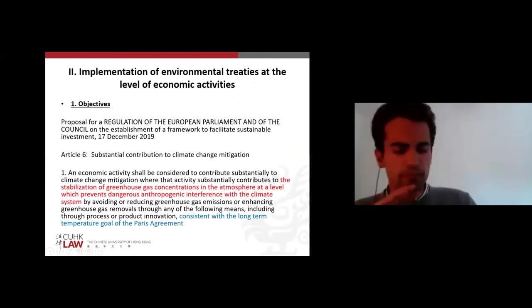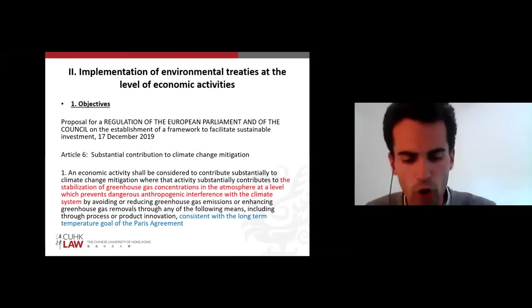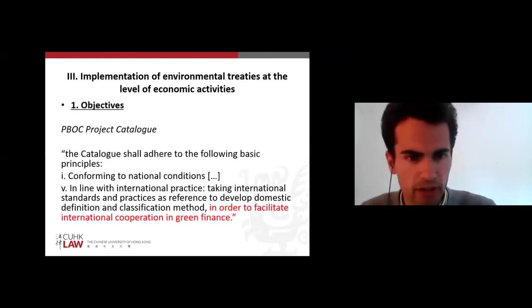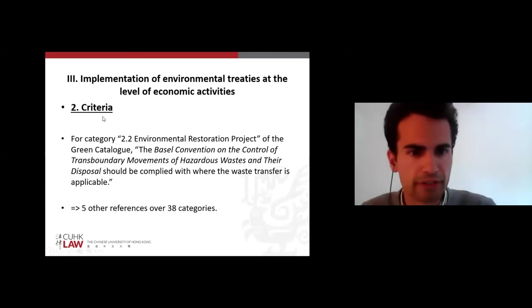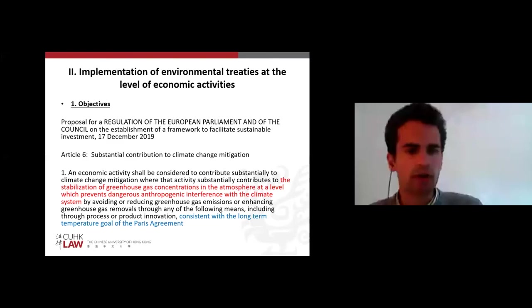To explain briefly how environmental treaties are implemented through green finance taxonomies down to the level of economic activities: there are three different modalities — through the objectives of these taxonomies, through criteria, and through interpretation.